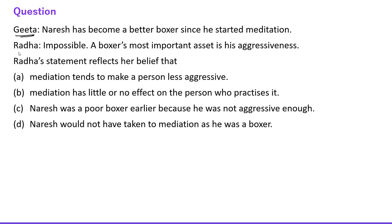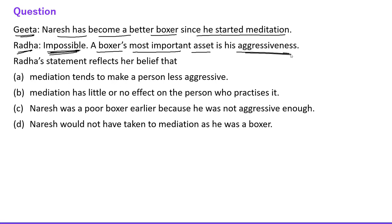Next question: Gita says 'Naresh has become a better boxer since he started meditation.' Radha says 'Impossible — a boxer's most important asset is his aggressiveness.' Radha's statement reflects her belief that meditation tends to make a person less aggressive. The word 'impossible' shows she has a strong belief that meditation reduces aggressiveness, which would hurt a boxer. So the correct answer is: meditation tends to make a person less aggressive.